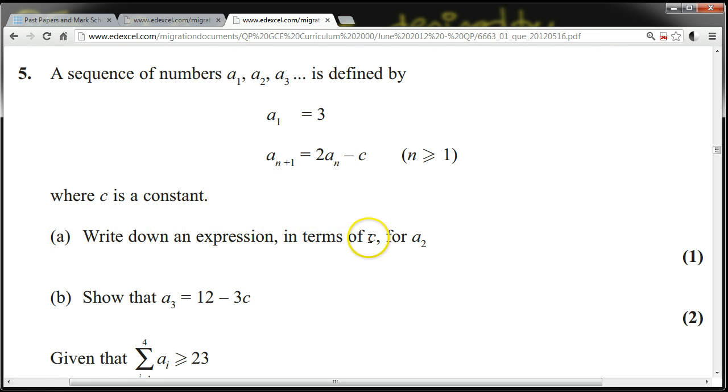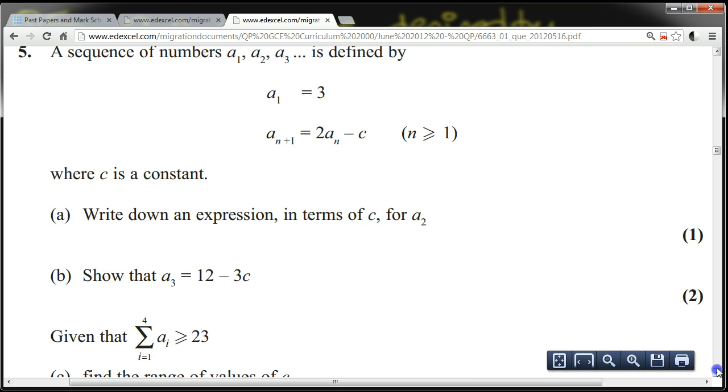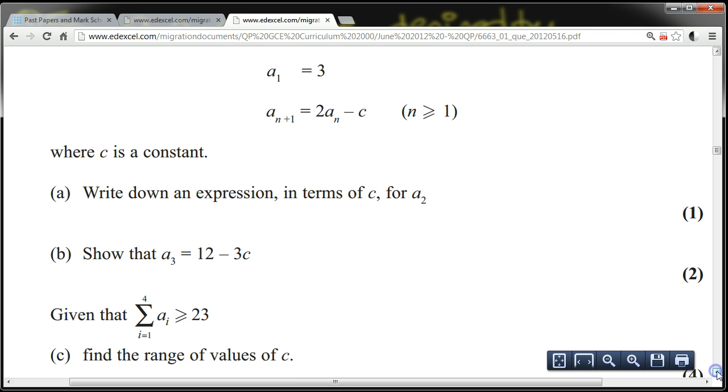Write down an expression in terms of c for a2. Show that a3 equals 12 minus 3c, given that the sum from i equals 1 to 4 of the a(i)'s is greater than or equal to 23, find the range of values of c.